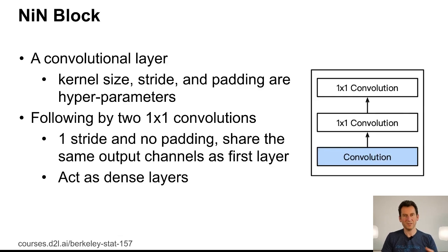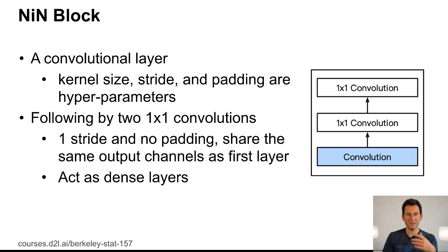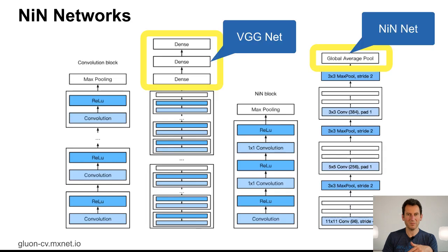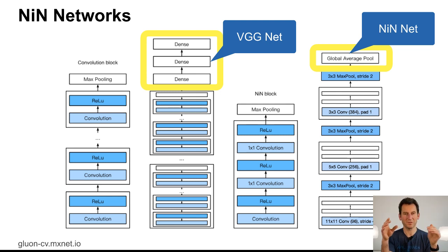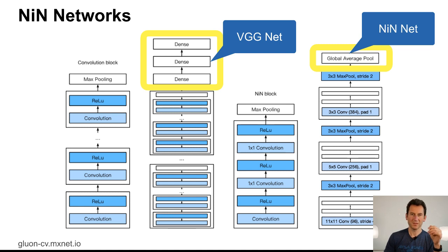This led to something called the NIN block — the network-in-network block. You basically have a convolution followed by two one-by-one convolutions, and those act in the same way as a dense layer. You repeat that a few times, giving the following architecture: NIN-net had a number of convolutions followed by one-by-one convolutions and max pooling to reduce the resolution. You did that three times to get a meaningful network-in-networks network, and this completely got rid of the dense layer.